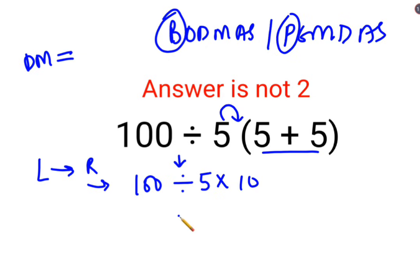So first we will do 100 divided by 5 which is 20 multiplied by 10. So the answer for this question is supposed to be 200.